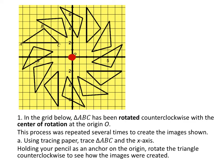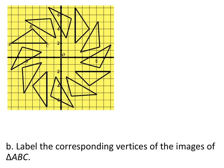This process was repeated several times to create all of these images. You could use tracing paper, but we don't have time for that right now. Let's label the vertices of one of them. We can see that C is toward the center of rotation, so this would be C prime. On the outside we've got A prime, and B prime. All of those other triangles are images of that pre-image.